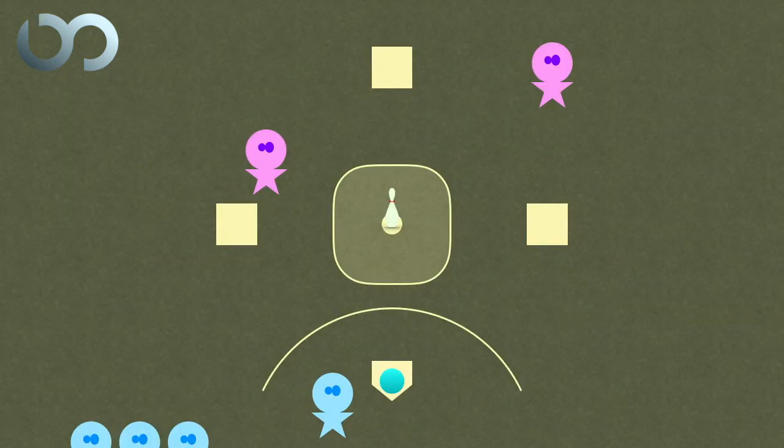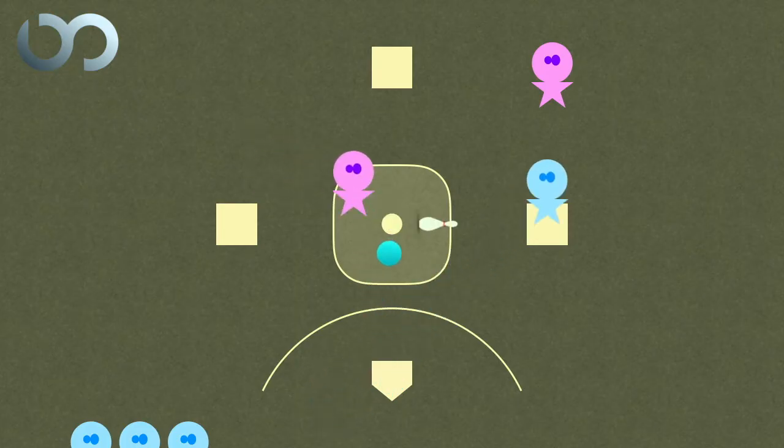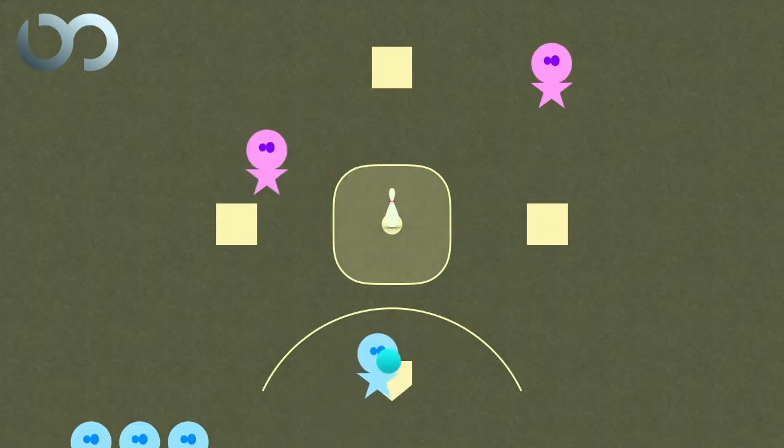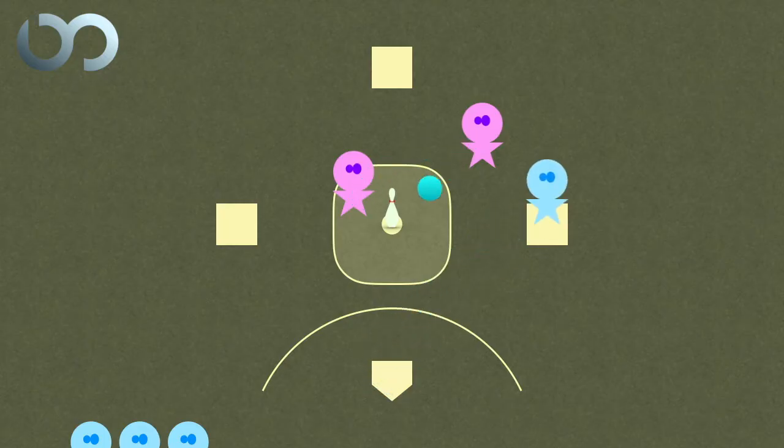The second special rule is they cannot make a play on the pin from inside the pin zone. You can run in the pin zone to get the ball, but you have to get the ball out of the pin zone in order to attack the pin.